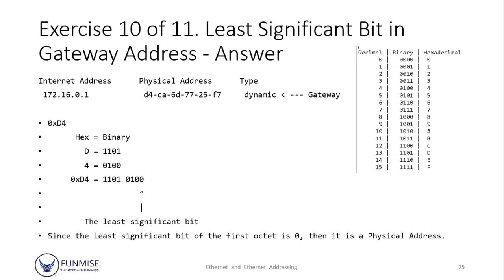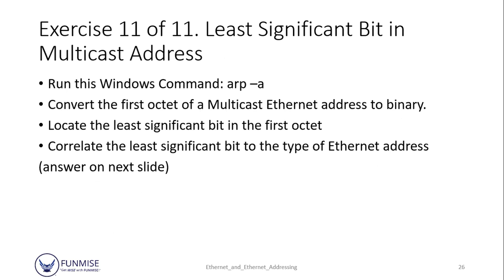You can pause and rewind if you're not clear. On to our last exercise, 11 of 11: the least significant bit in the multicast address. We're going to run ARP -A, convert the multicast Ethernet address to binary, locate the least significant bit of the first octet, and correlate the least significant bit to the type of Ethernet address. You can follow along and do this on your own computer.